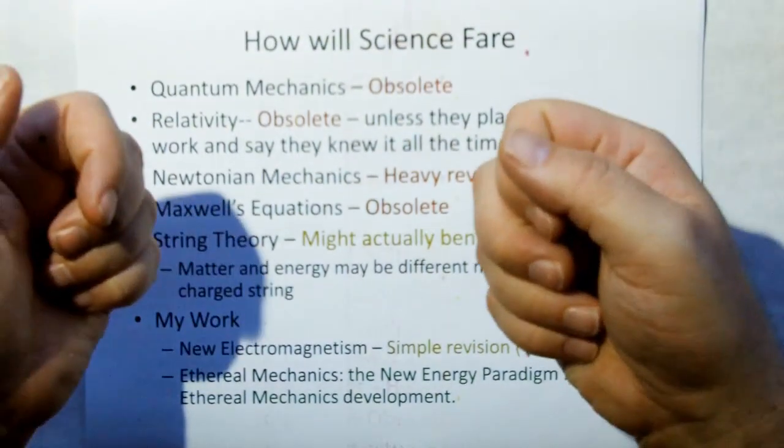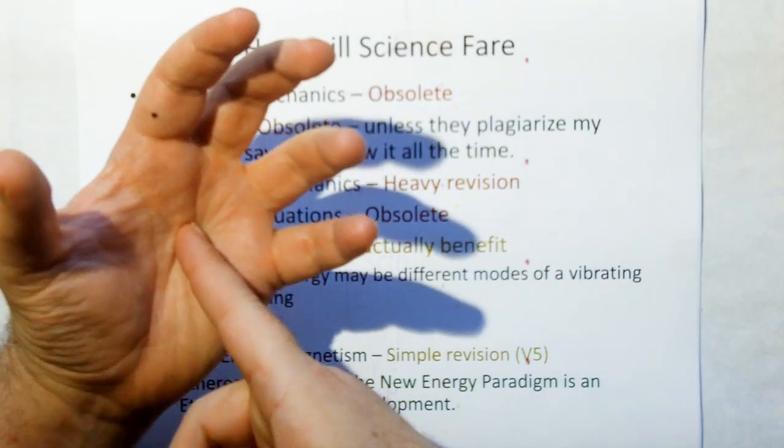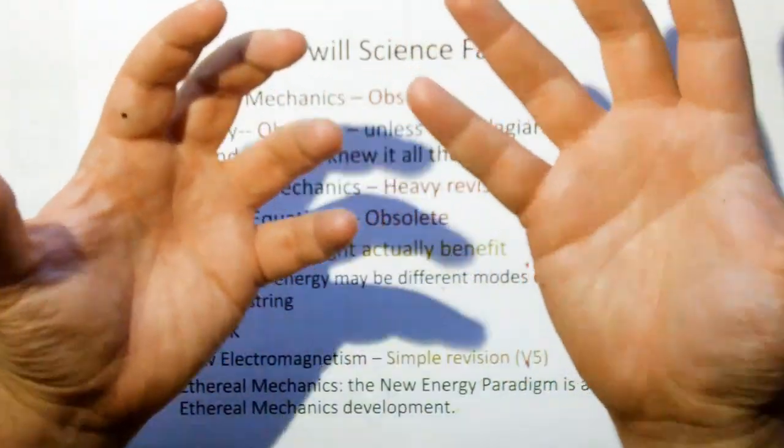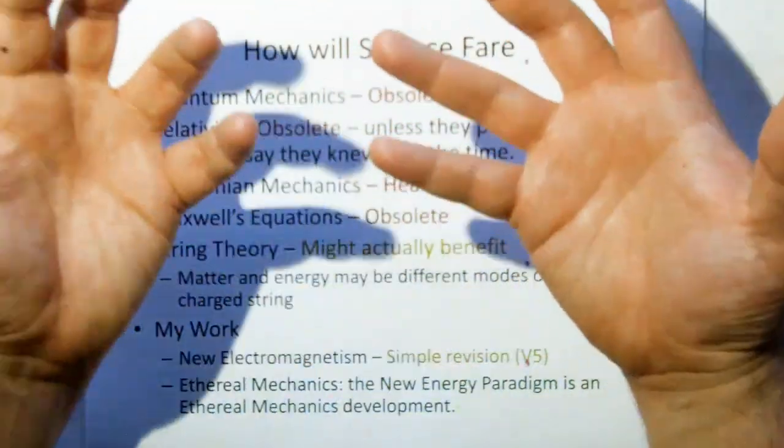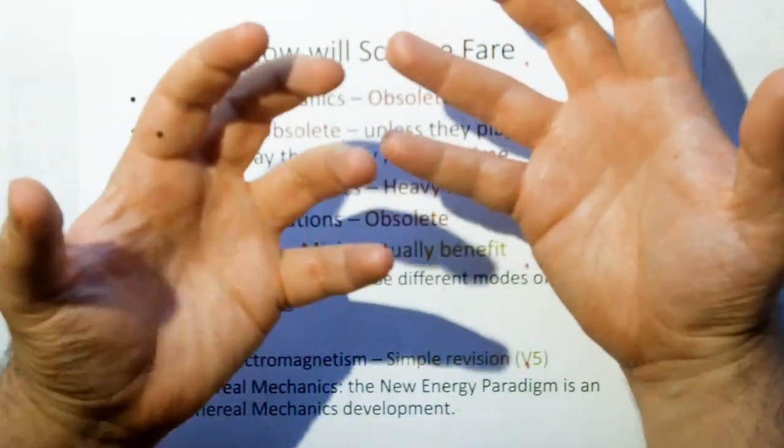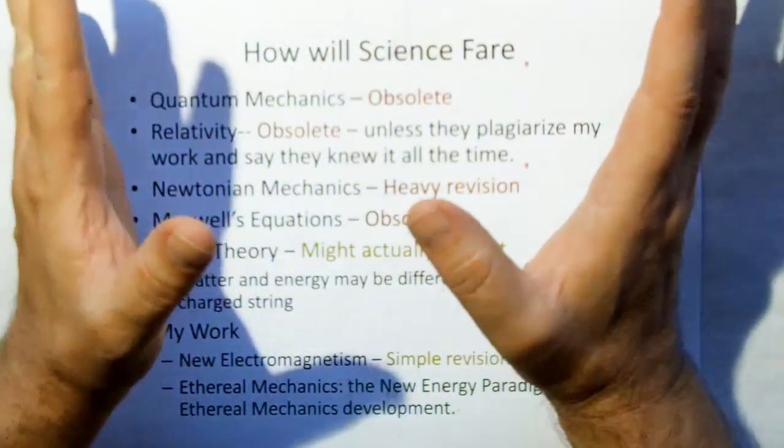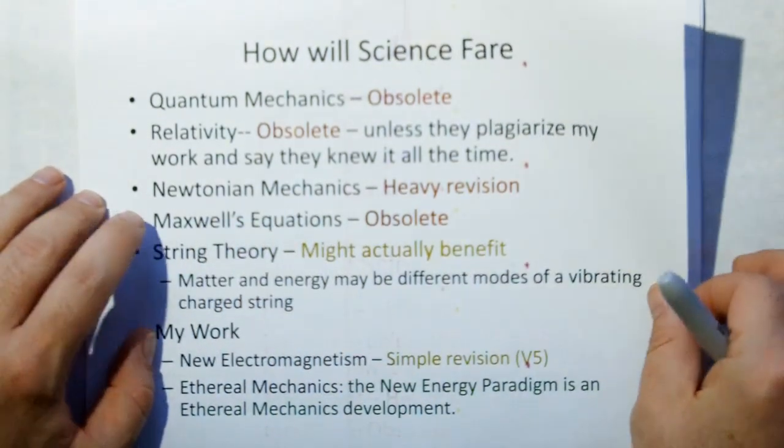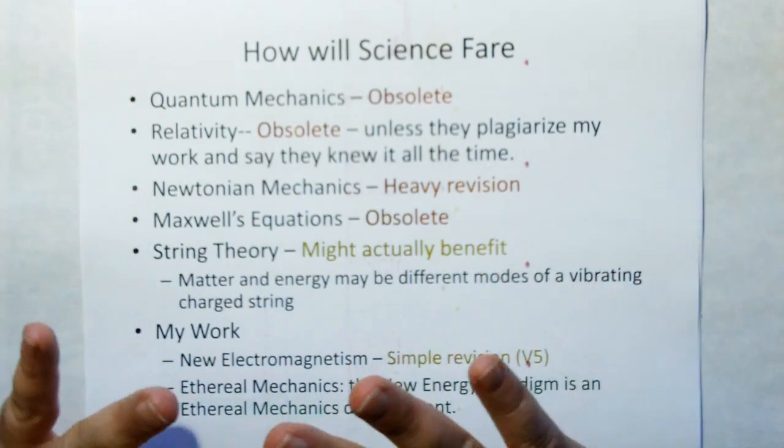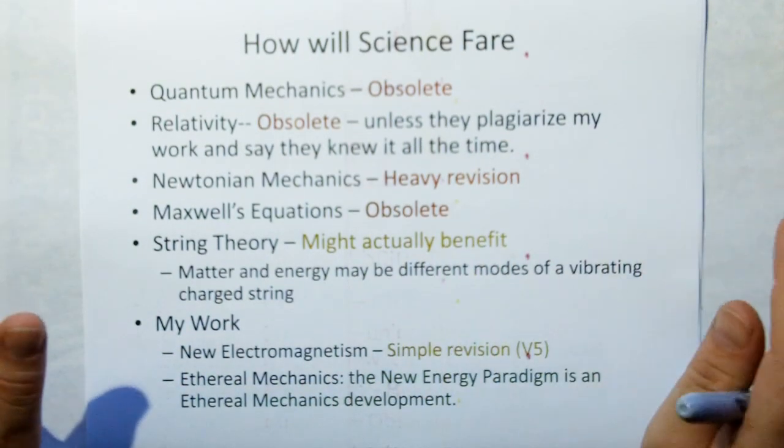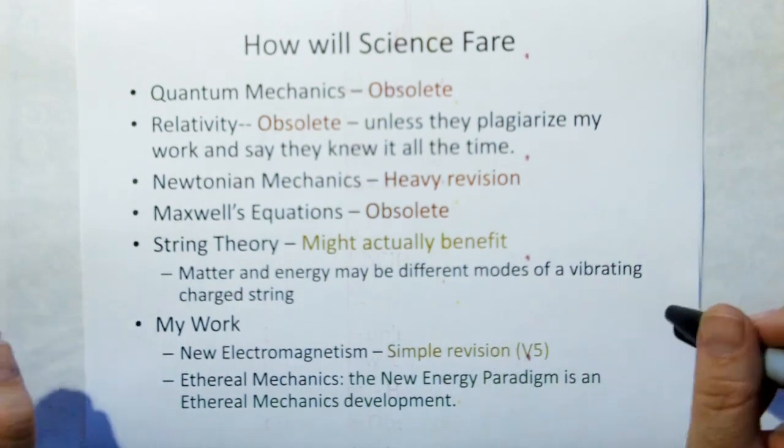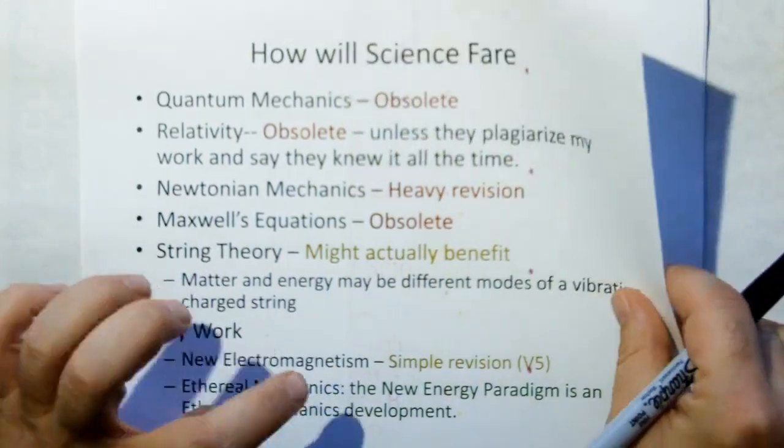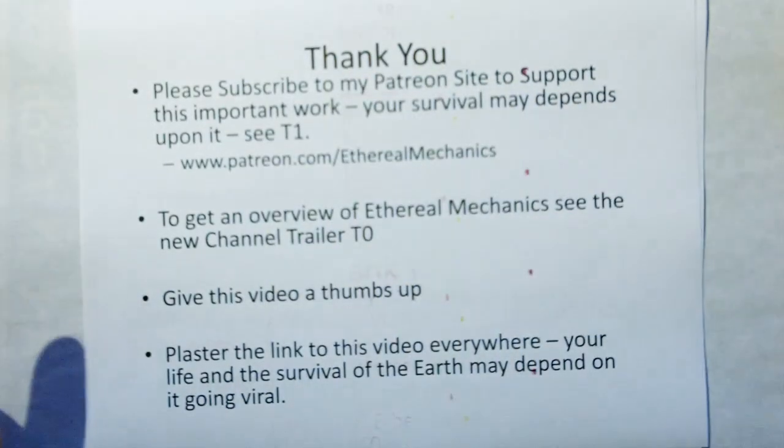And then now you have quantum mechanics. Quantum mechanics has tried to understand matter. But really their matter is just a collection of scalar properties that they try to do all the statistical modeling on. But there's no model for gravity. So gravity is like everywhere in the universe and quantum mechanics has no understanding of it. Newtonian mechanics is going to have heavy revision. Maxwell's equations are already obsolete. You just go to my foundation series and you're going to see I can tear Maxwell's equations through your own buttholes. String theory might actually benefit from this but I doubt for long. And new electromagnetism is going to come out with a new release using the new units. And obviously this development is for ethereal mechanics so ethereal mechanics is improved by this.